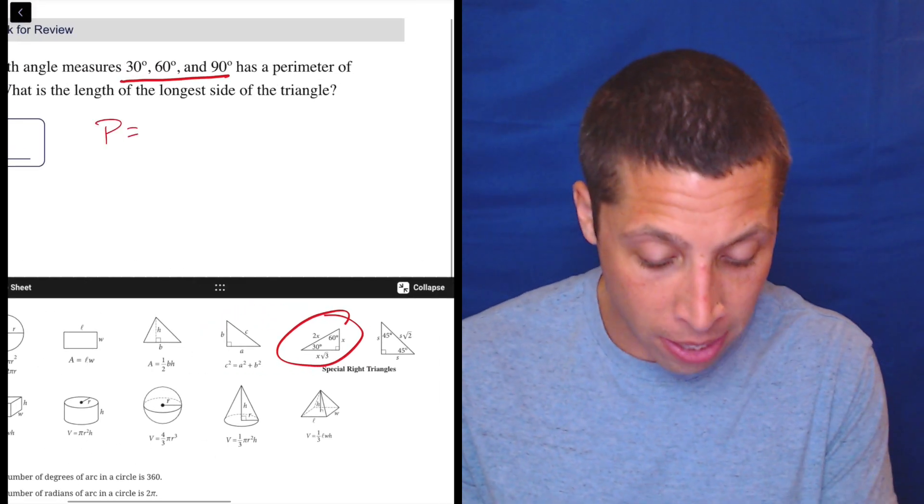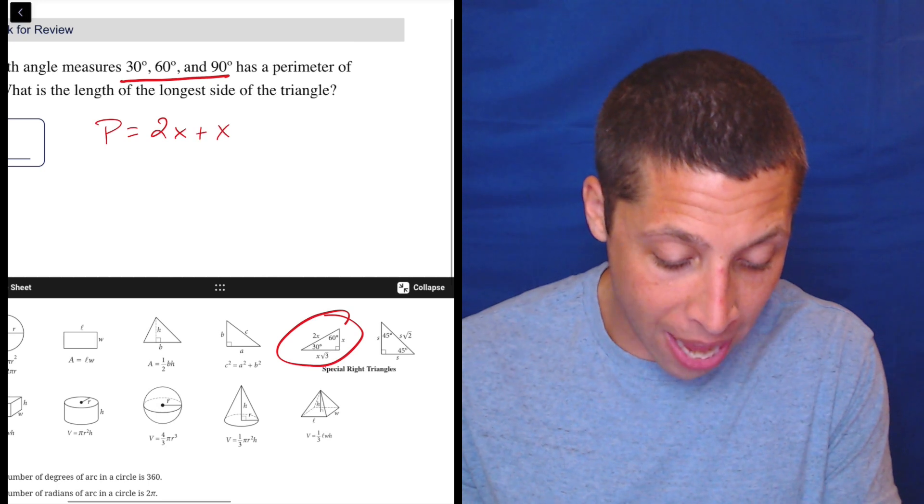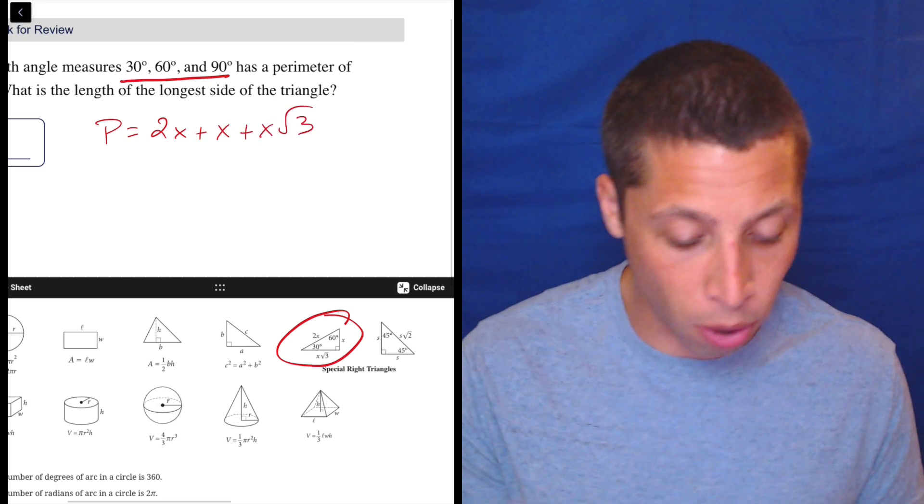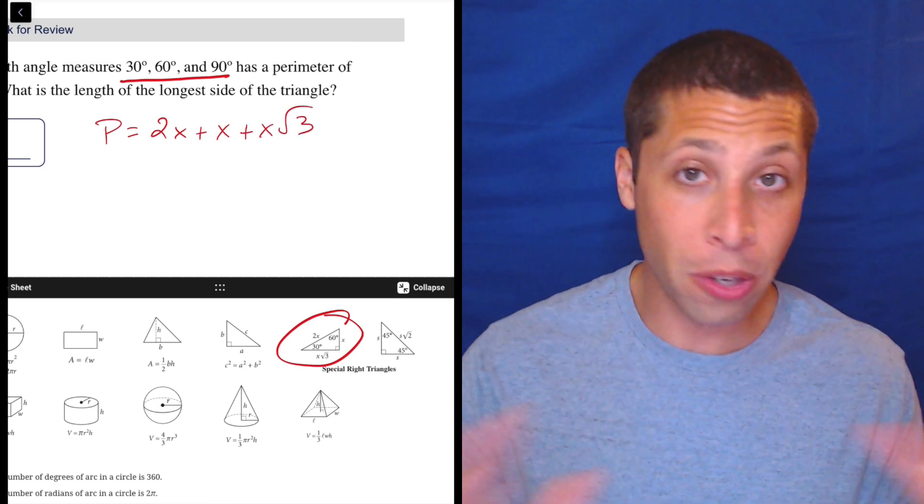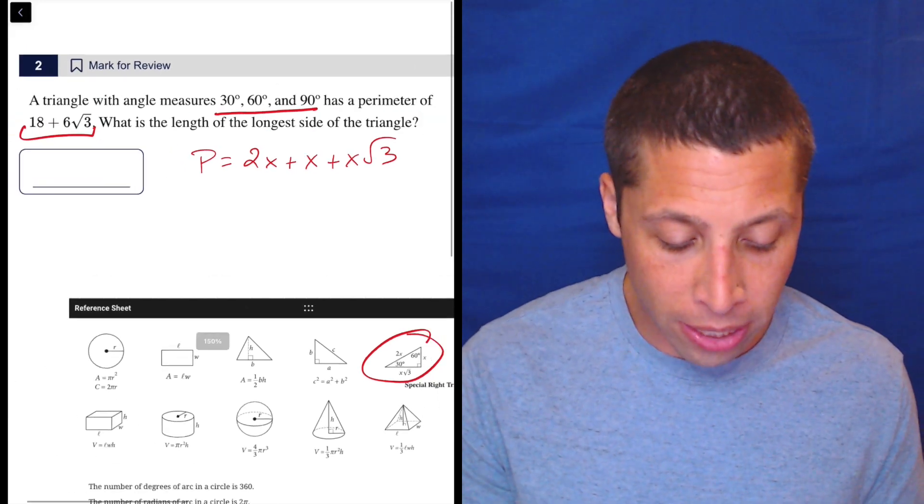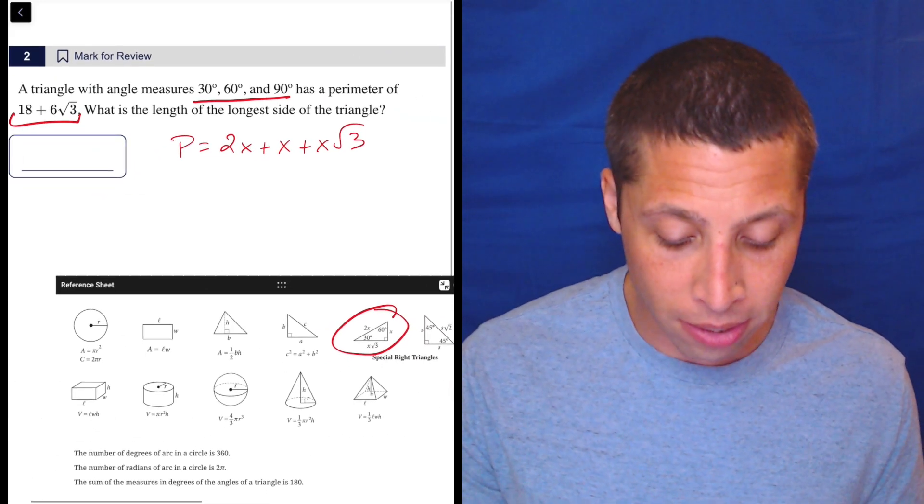The perimeter is going to be the 2x plus the x plus the x root 3. All three of those things together, perimeter is always just sum of the sides. So that is going to equal 18 plus 6 root 3.